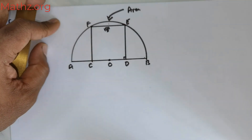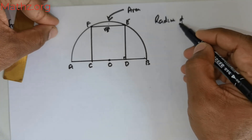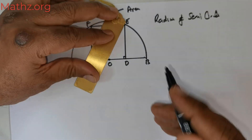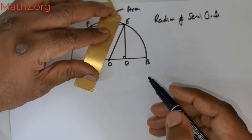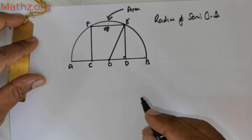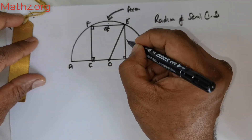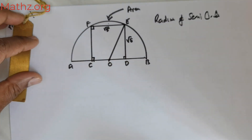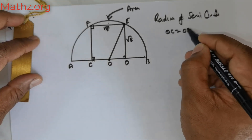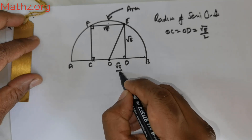This is a square, so this is going to be making 90 degrees. Foremost, what I wish to do is calculate the radius of the semi-circle. I am going to draw a line here. From the center to the circle, that is the radius. Now I know this is a square and this is going to be root of 5. Now O is the center point, so OC is equal to OD, which is equal to root of 5 divided by 2.